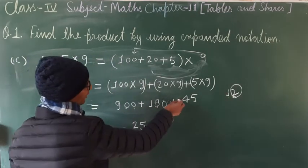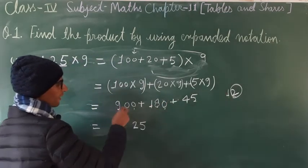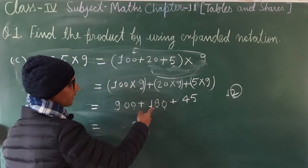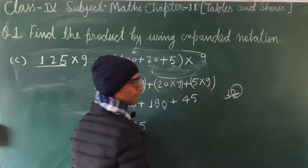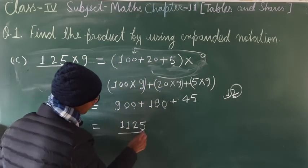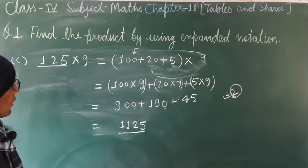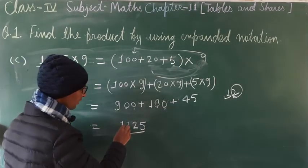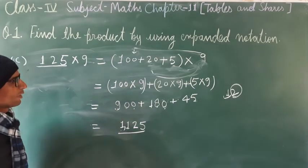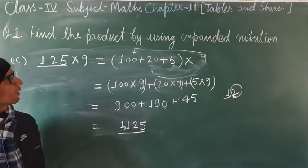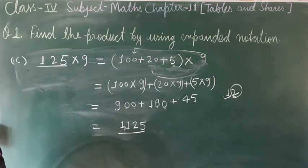Hundreds place: 9 + 1 + carry 1 = 11, so write 1 and carry 1. Thousands place: 1. Therefore 125 × 9 = 1125. This is how you find the product using expanded notation.